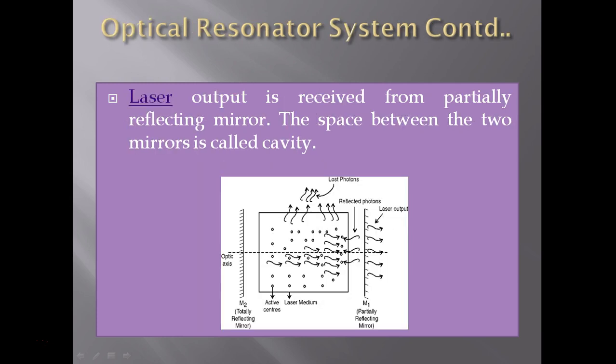Here you can see the optical resonator system. The optical word comes from optics, that is light. And resonator word comes from resonance, which means to match. Here we match the frequency of photons. Laser output is received from partially reflecting mirror. The space between the two mirrors is called cavity.